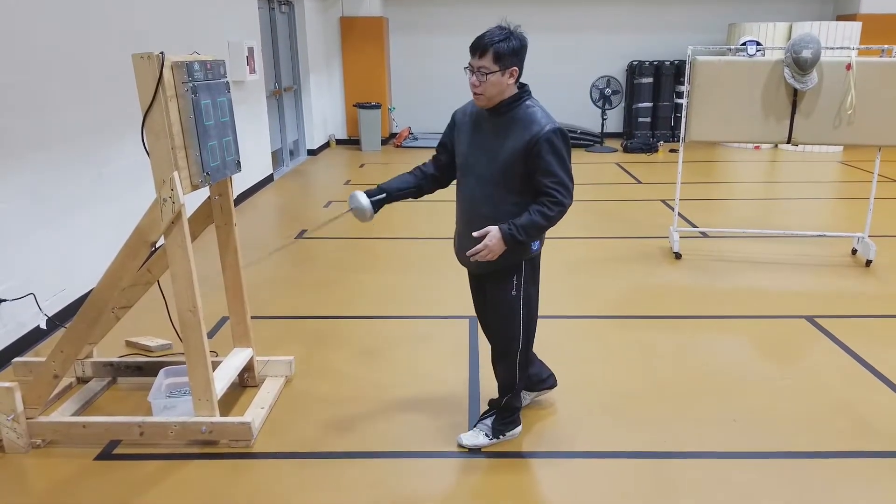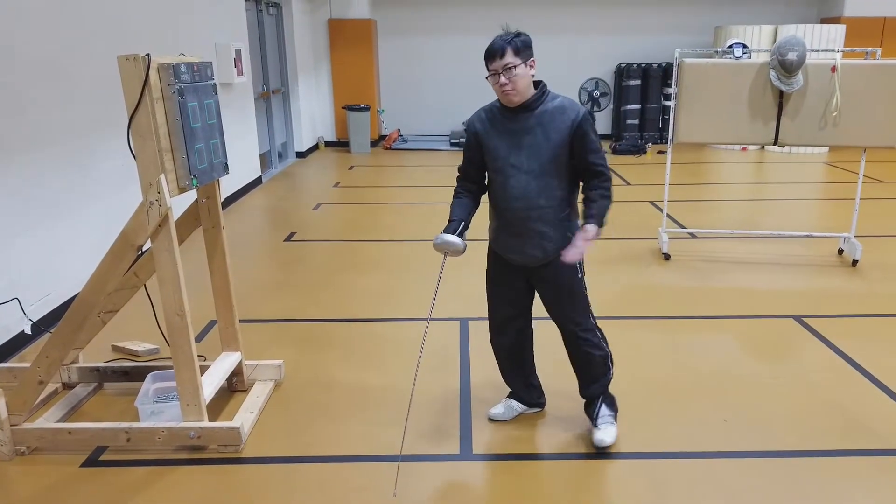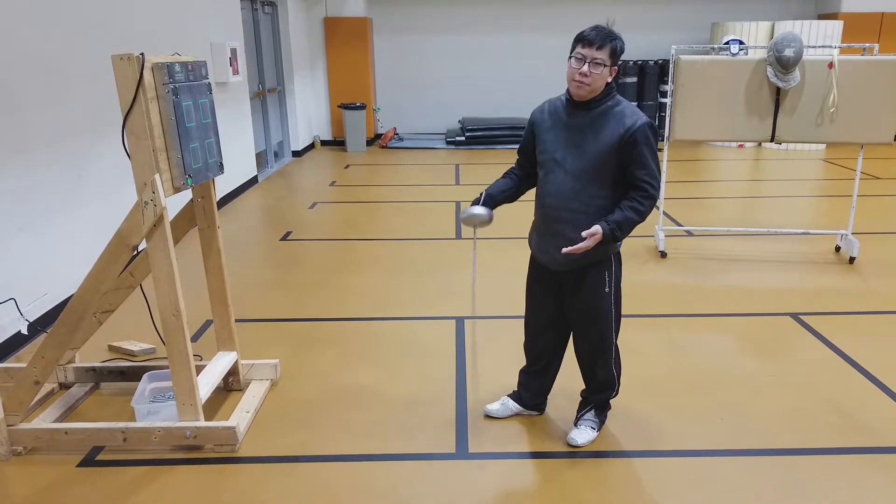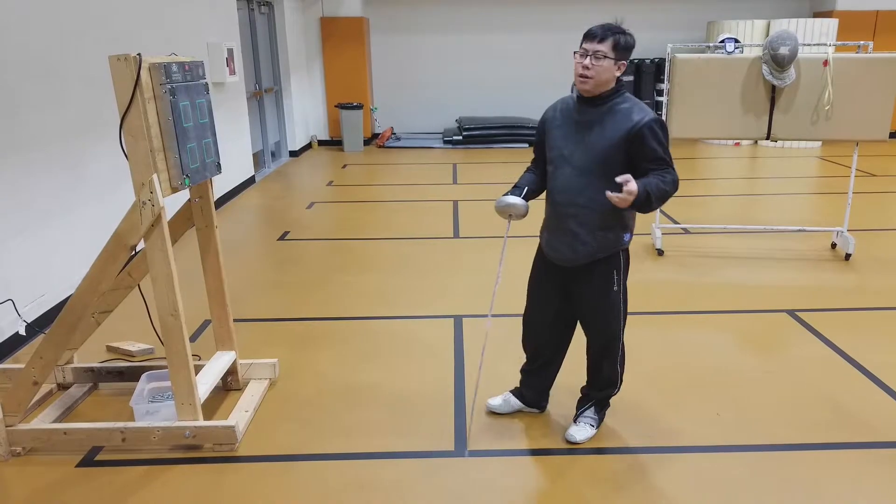This should be done under supervision of an advanced fencer. You don't need to line up everybody since it's going to take about a minute. You can just basically do a second drill at the same time, and then swap two people in and out the entire time.